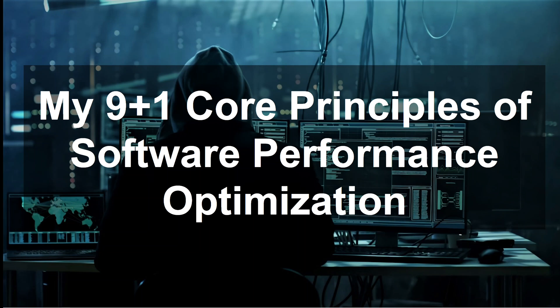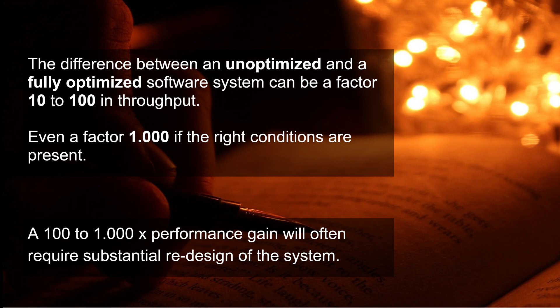In this video, I will explain the 9 plus 1 core principles I use when working on software performance optimization. These are principles I have picked up over the years and which have proven quite useful. When using these principles, you can almost always find some performance gains in an unoptimized application. The difference between an unoptimized and a fully optimized software system can be a factor of 10 to 100 in throughput — even a factor of 1000 if the right conditions are present.